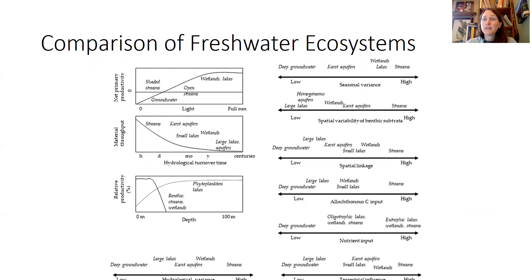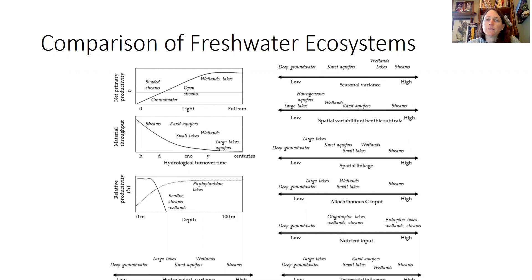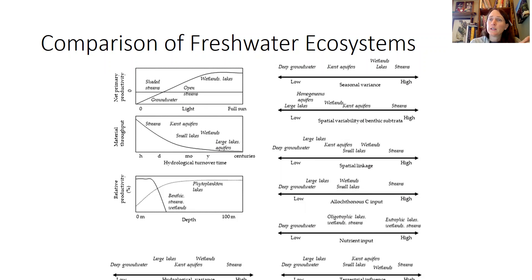We mainly talked about stream ecosystems, but we can make comparisons between wetlands, large lakes, and streams. Looking at seasonal variation, we see low variation across seasons for groundwater, and much higher variation for wetlands, lakes, and streams. For spatial variability of benthic substrates, there's very low variability in large lakes and aquifers, middle variation in wetlands, and really high variation in streams. Looking at spatial linkages, there's low linkage for groundwater and large lakes, and high linkage for wetlands and streams.